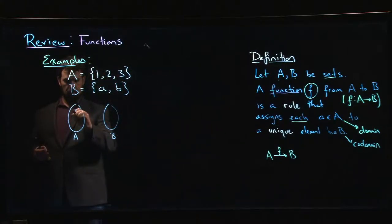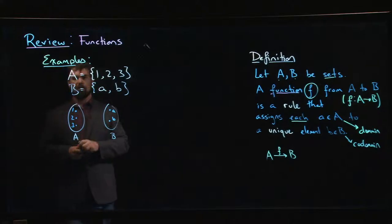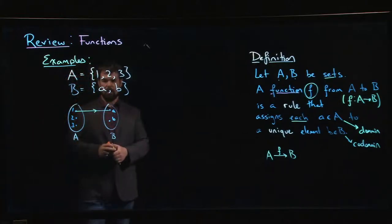We're going to specify the function by just saying what goes where. We could send 1 to A. We could send 2 to B.